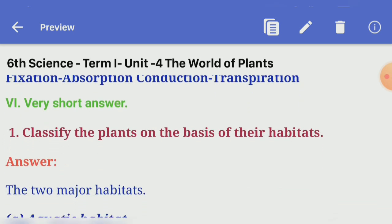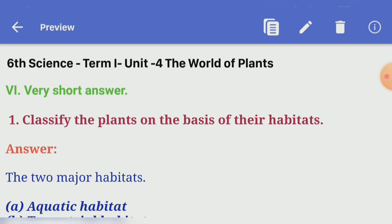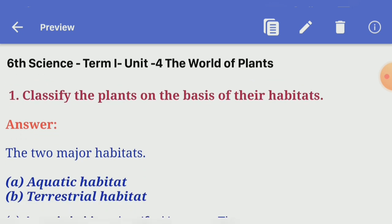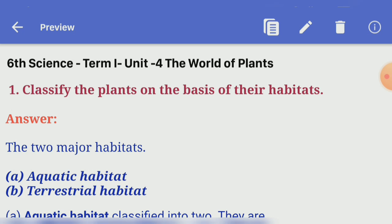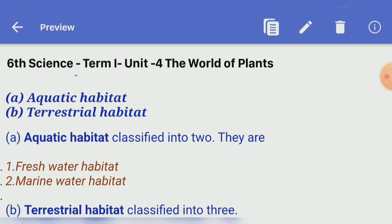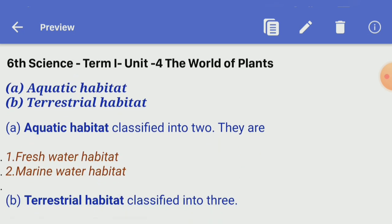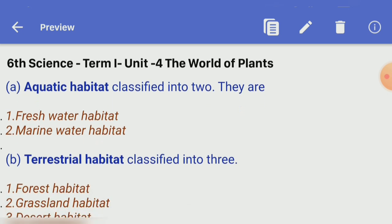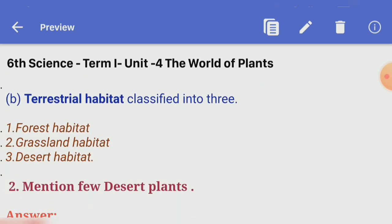Very short answers. First one, classify the plants on the basis of their habitats. Answer: the two major habitats are aquatic habitat and terrestrial habitat. Aquatic habitat is classified into two: freshwater habitat and marine water habitat. Terrestrial habitat is classified into three: forest habitat, grassland habitat, and desert habitat.